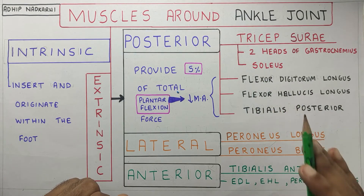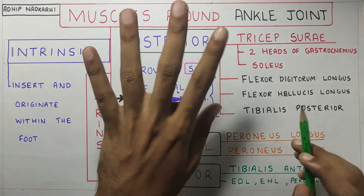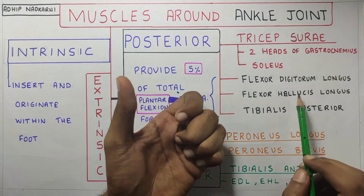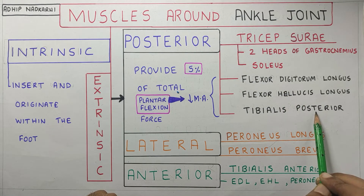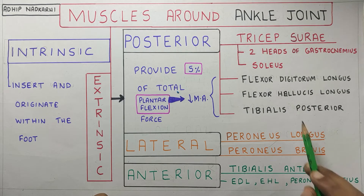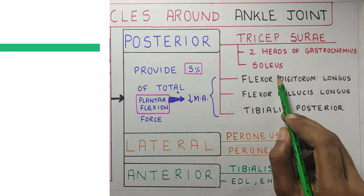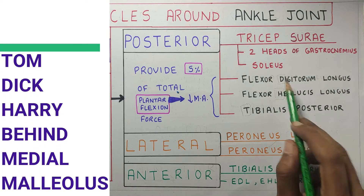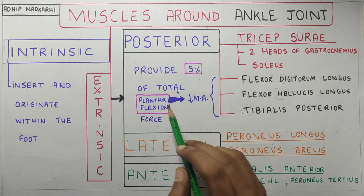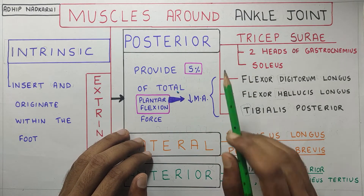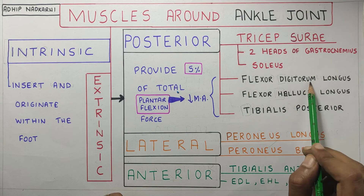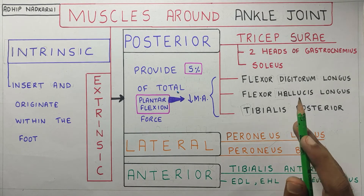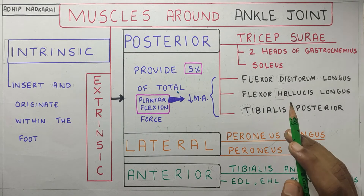The other muscles under the posterior compartment are flexor digitorum longus, flexor hallucis longus, and tibialis posterior. A simple mnemonic: T for Tom, D for Dick, and H for Harry. These three muscles have a very small moment arm for plantar flexion, so they don't assist much in plantar flexion. The flexors cause flexion at the lesser and great toes, and tibialis posterior plays a major role in dynamically controlling the arches of the foot.